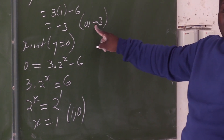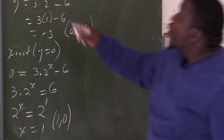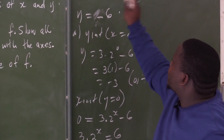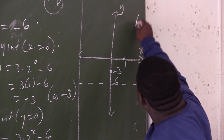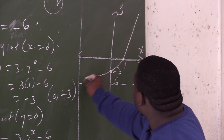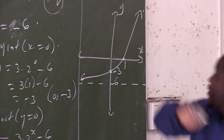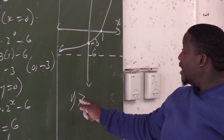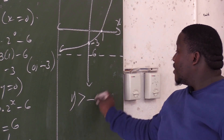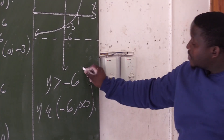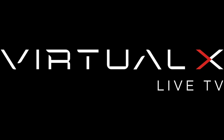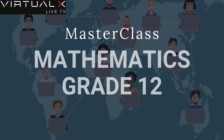I know the y intercept. I know the x intercept. I know what my asymptote is: y equal to negative 6. Then it's a matter of joining these points, and then you have an exponential graph. What is the range of f? Therefore, my range will say y is greater than negative 6. That is the range. Thank you.